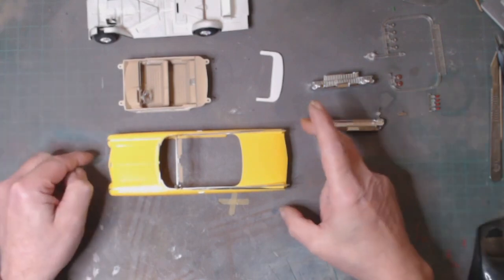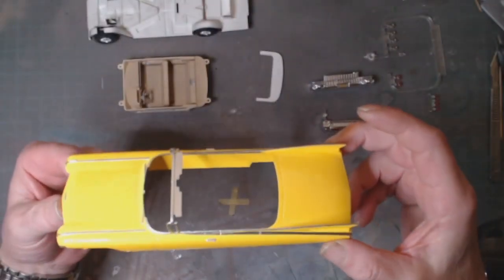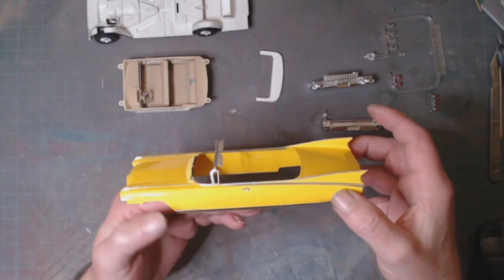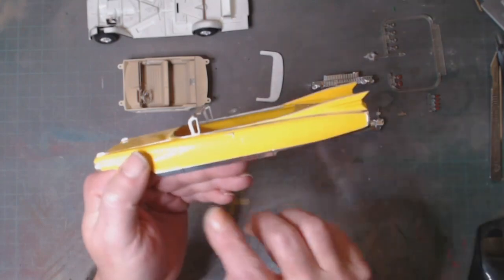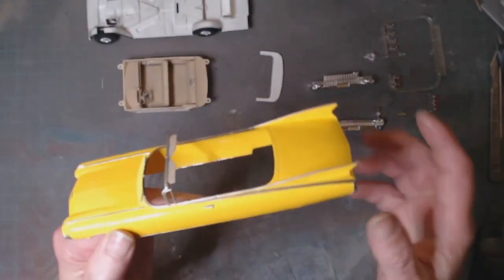We've got the body all painted, nice and glossy. We used metal foil all around the bottom here and the main part that goes up there.